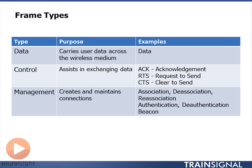There are also control frames. When sending data, sometimes before sending the data you'll do a request to send, asking the access point: can I send some data? The access point will respond back with a clear to send. Acknowledgements are also control frames — they are used to help manage and assist in the exchange of data, confirming that data was received successfully.